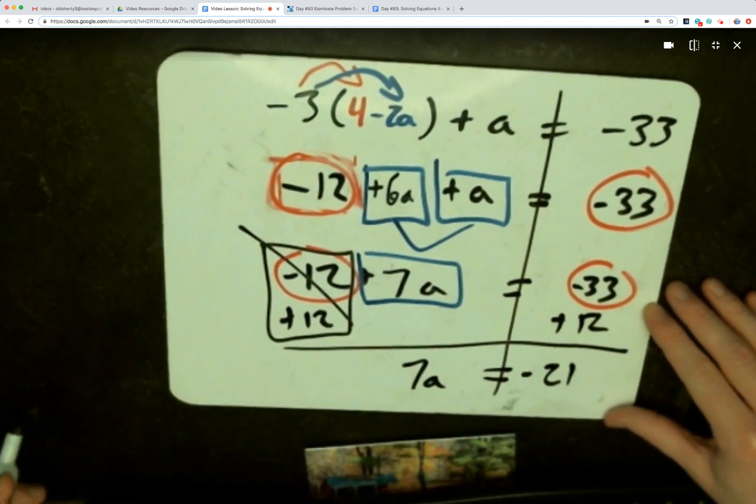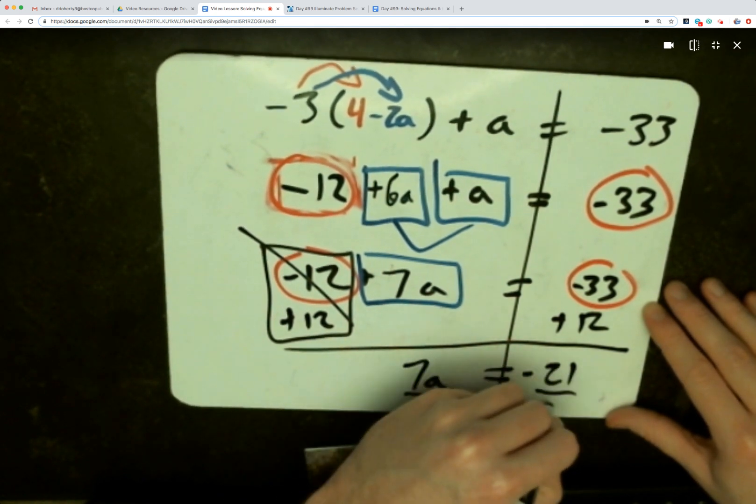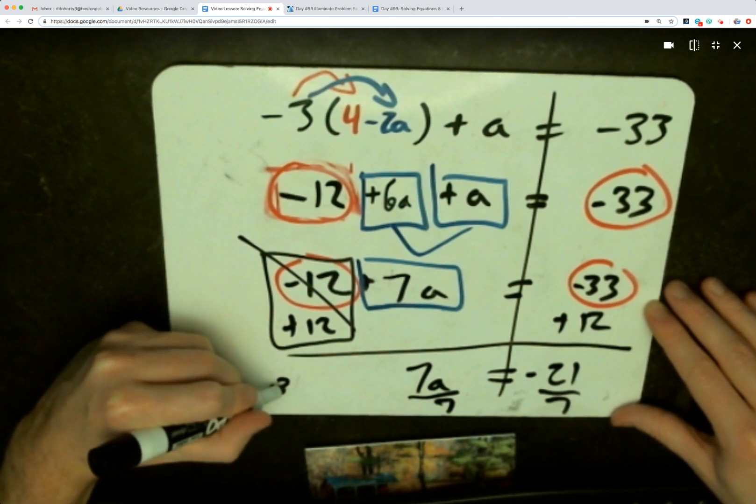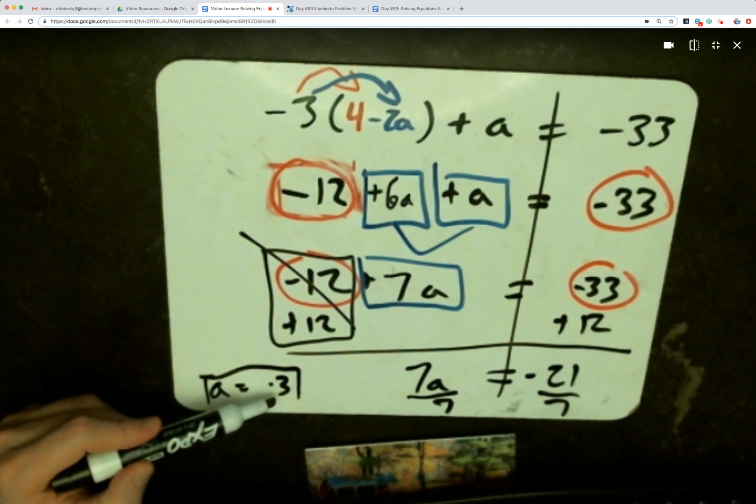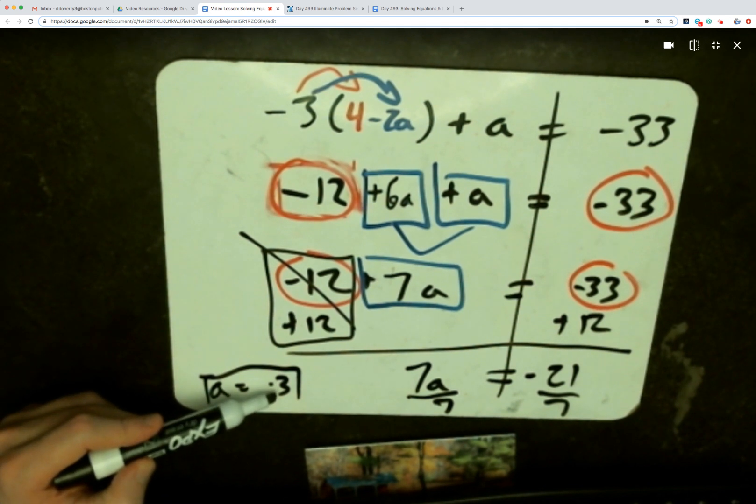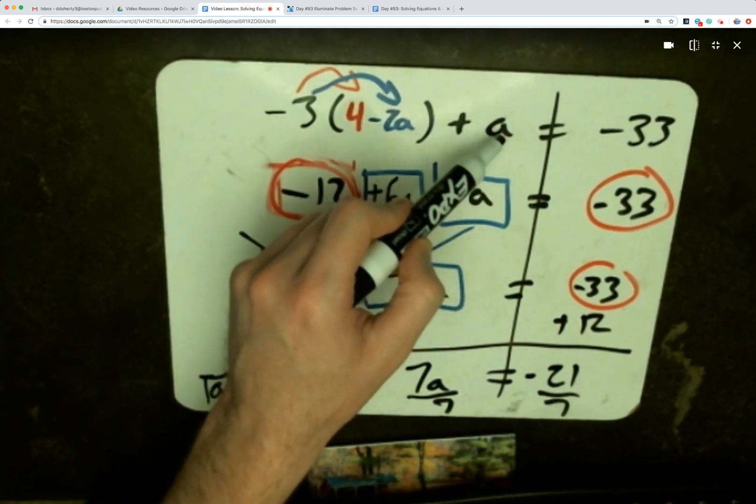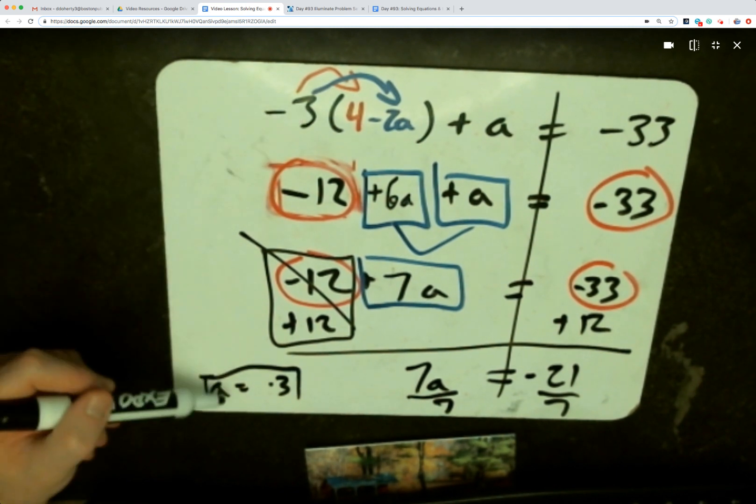7a equals negative 21. I would solve that by inspection. You could divide both sides by 7 though, and dividing both sides by 7 helps us see here that a has to equal negative 3. If I want to know if a definitely equals negative 3, we should recognize every time we're asked to confirm solutions, I don't have the time to do it right now, but you on your own are going to take the negative 3, plug it in for both of the a's in this equation, and see if it really creates a true statement, see if it is the solution.